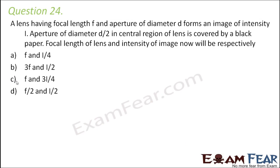Question number 24. A lens with focal length F and aperture of diameter D forms an image of intensity I. An aperture of diameter D/2 in the central region of the lens is covered by black paper. If you cover part of a lens with black paper, the focal length remains unchanged — there is no impact on focal length. However, there is an impact on intensity because intensity depends on how much light passes through the lens.